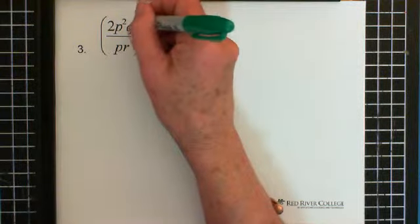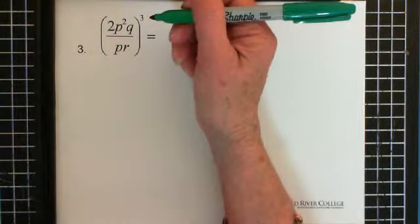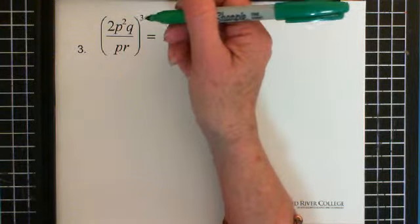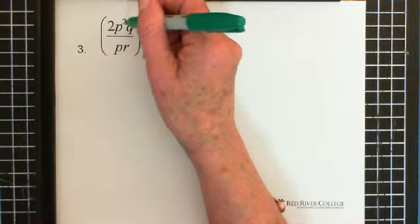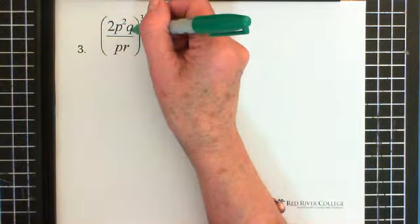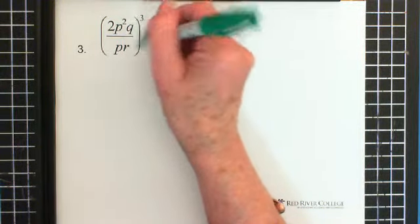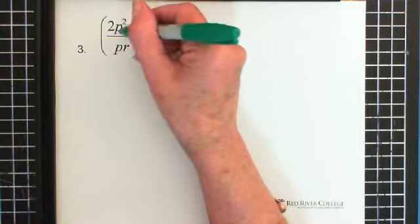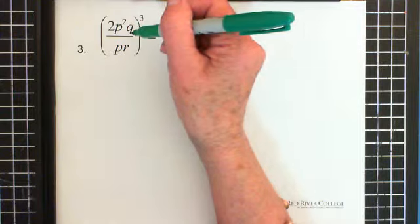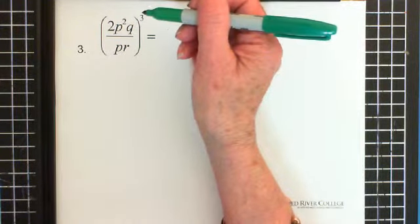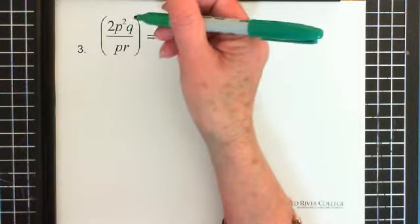So here we have a cube and every single thing in here is cubed. Now there's a couple of ways you could approach this. You can see that we have 2p squared q divided by pr. And the whole thing is cubed. So if you wanted to, you could deal with the p first before you deal with the cubed. And frankly, it doesn't matter which way you go. But I'm inclined to deal with the p first, so that's what I'm going to do.